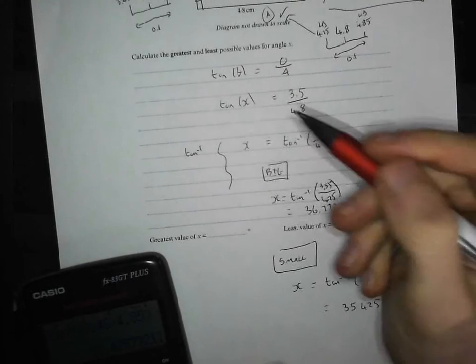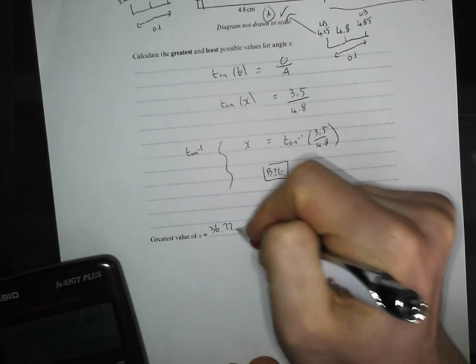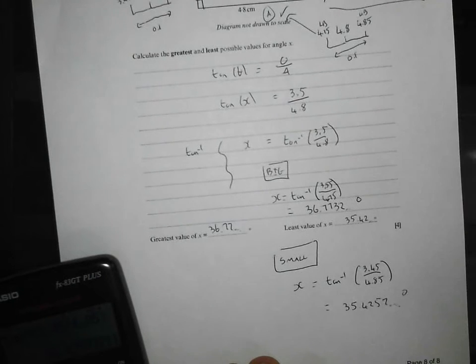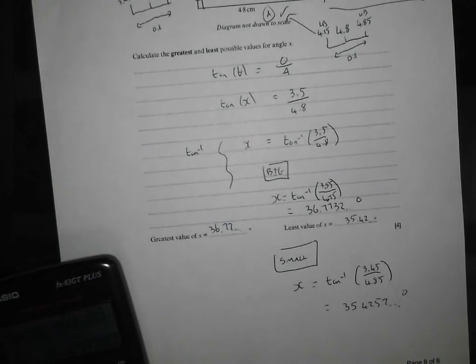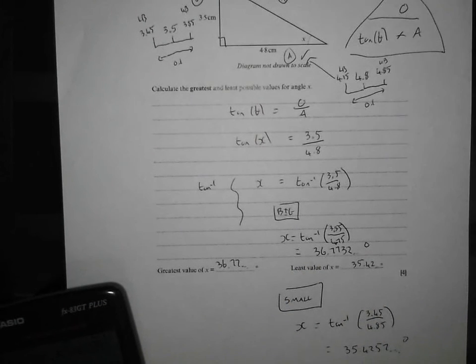So we best just make sure we fill those in, 36.77 and 35.42 dot dot dot. And that is taking trigonometry and fusing it together with bounds to form that beautiful question. And that concludes our wonderful journey through Walking Talking Topics, Pythagoras and Trig.